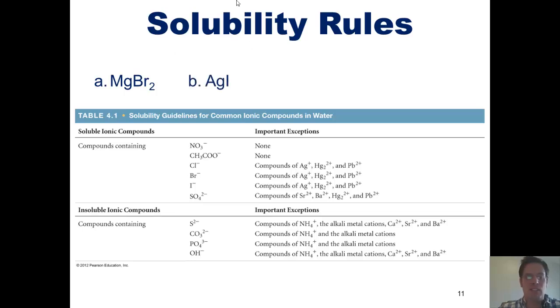Example B is silver iodide. Let's see if we can find silver or iodide somewhere in this table. We look down here. Here we see I minus iodide and note this table tells us that all iodide containing compounds are soluble in water except for silver iodide, mercury iodide, and lead iodide. Is silver iodide one of those? Yes, it is. Hence, silver iodide is insoluble in water.